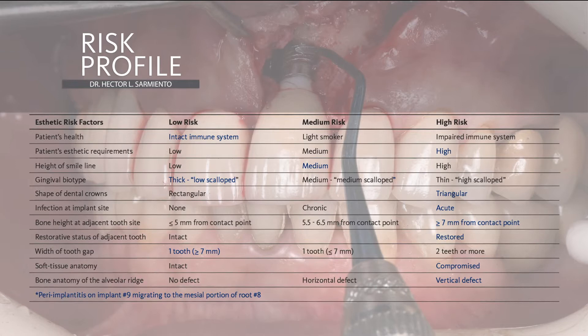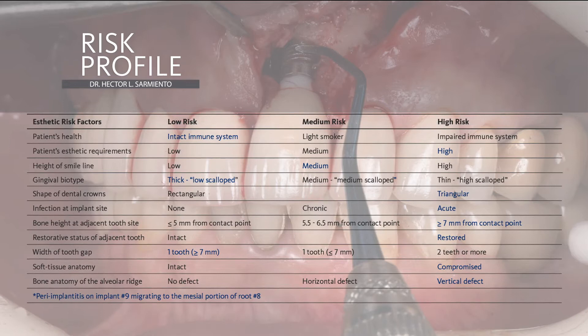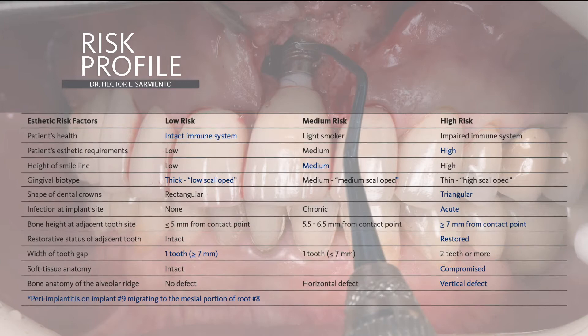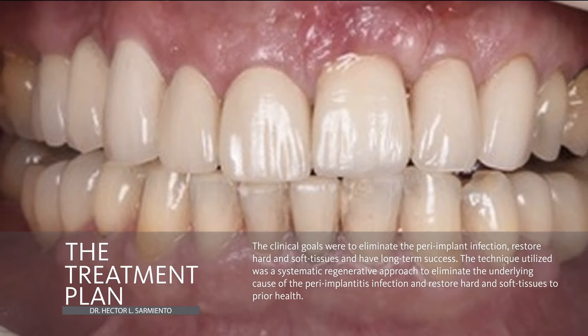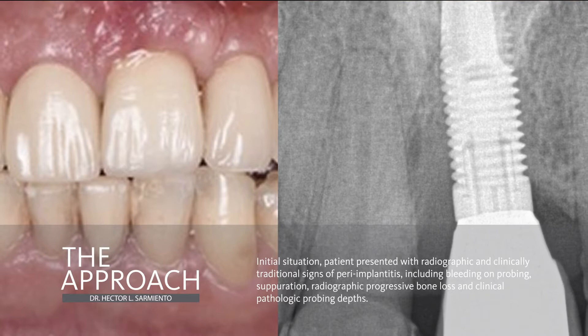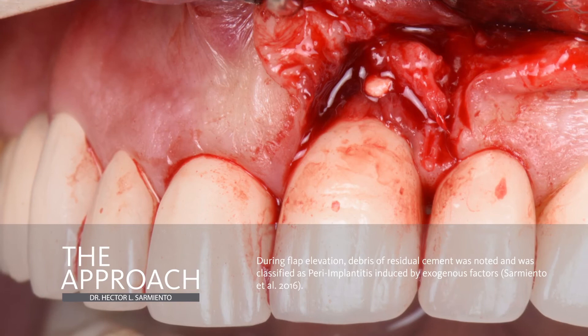Prior to showing you how we treat our patient, I want to point out that the patient has no medical concerns that could be a contraindication to performing any type of oral surgery. The anatomy of the alveolar ridge presents itself with a huge vertical defect, not only on implant number 9, but it also extends to the mesial of tooth number 8. So we are not only dealing with attempting to regenerate an infected dental implant, but also attempting to rebuild a bony deficiency around a natural tooth by means of a GBR, or guided bone regeneration. The approach we took after our clinical and radiographic analysis was to microsurgically raise our mucoperiosteal flap and expose the infected implant site.